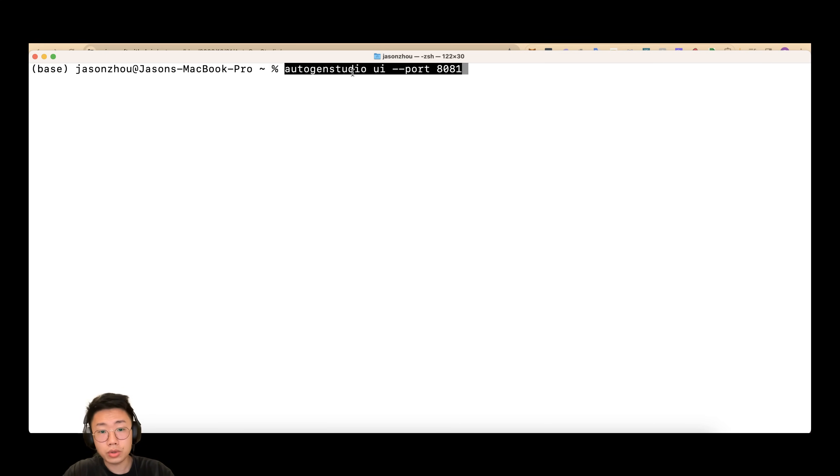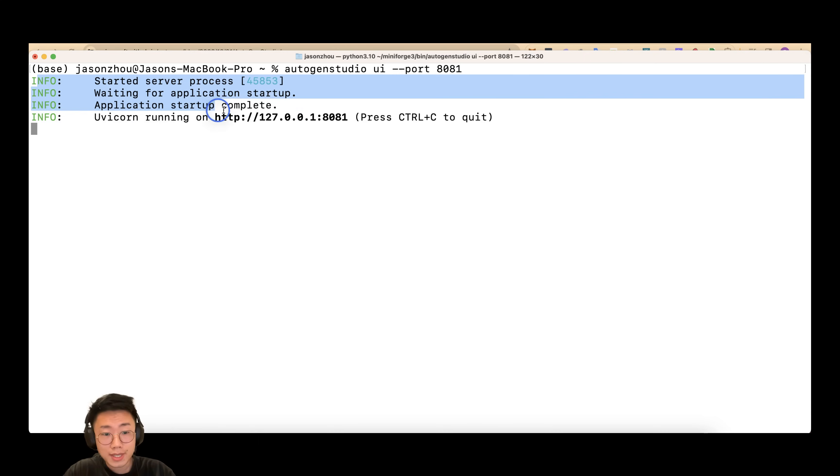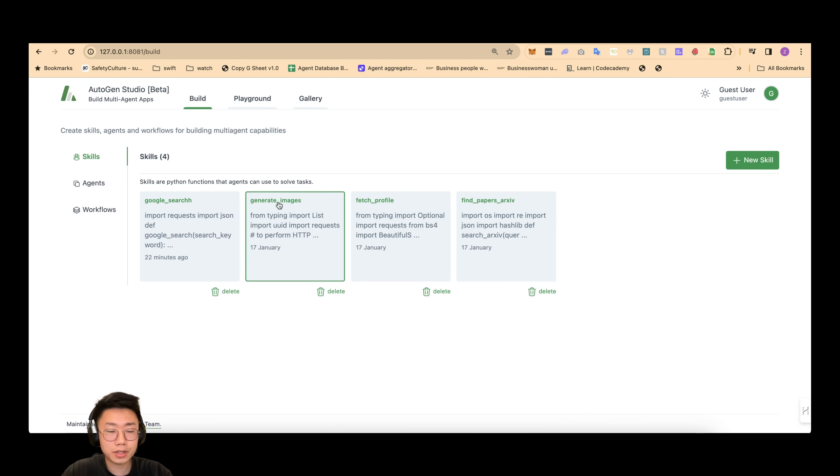Let's click on create a new secret key and give a name Autogen Studio and come back and paste in your API key here. After you set this up, you can just run Autogen Studio UI --port 8081. Once it succeeds, you should see a message like this.